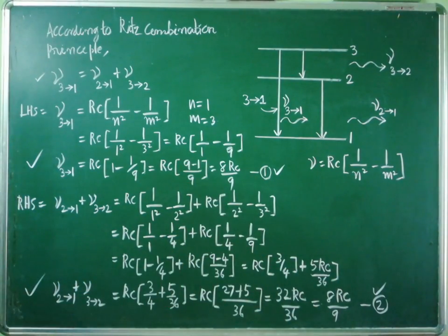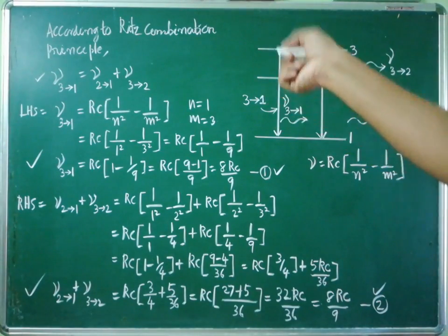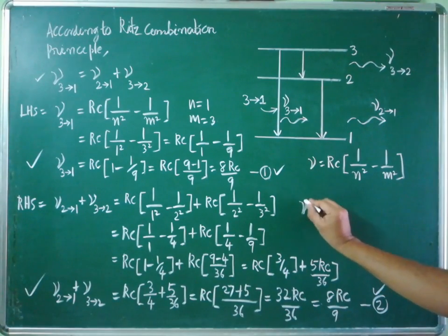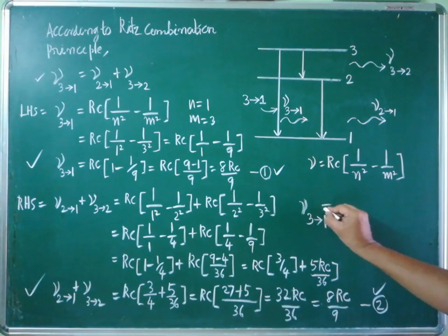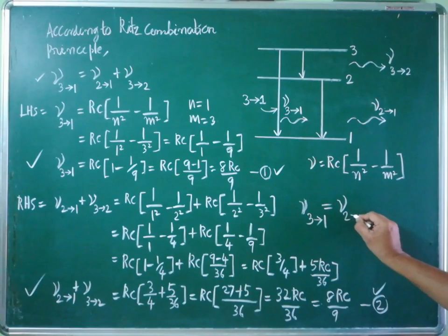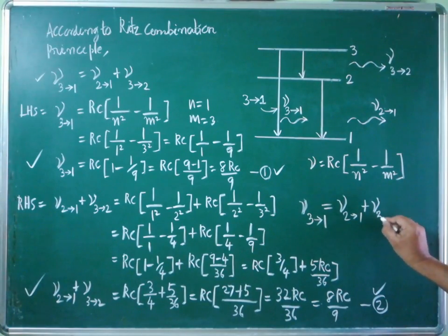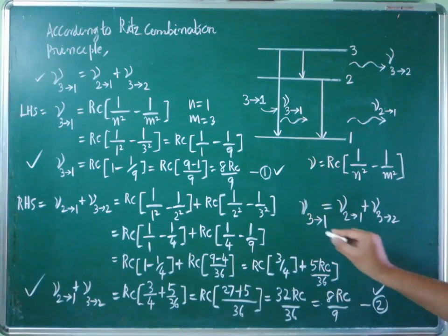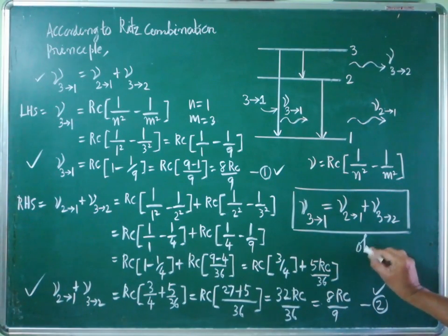Looking at both results — both the LHS and RHS equal 8Rc divided by 9. We have proved that the frequency of the spectral line for the transition 3 to 1 is equivalent to nu 2 to 1 plus nu 3 to 2. Therefore the Ritz combination principle equation is obeyed and it is proved. Thank you.